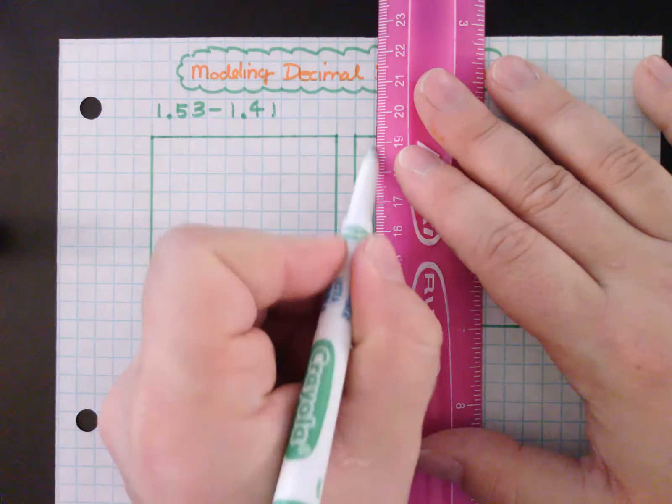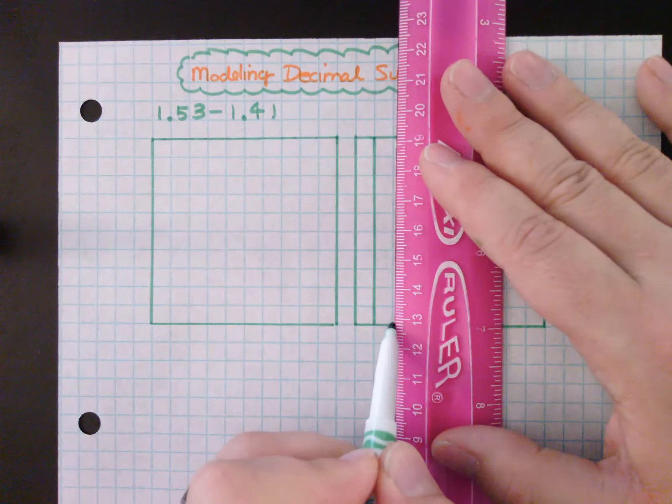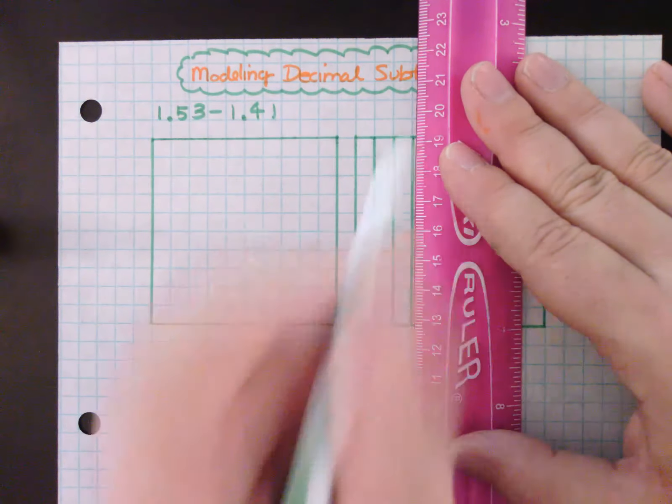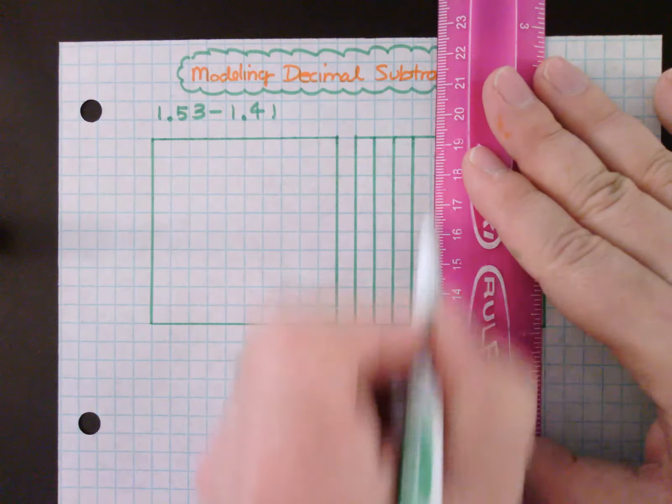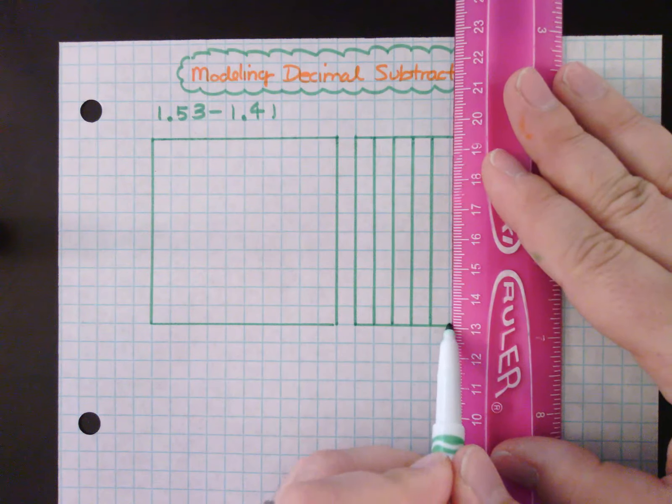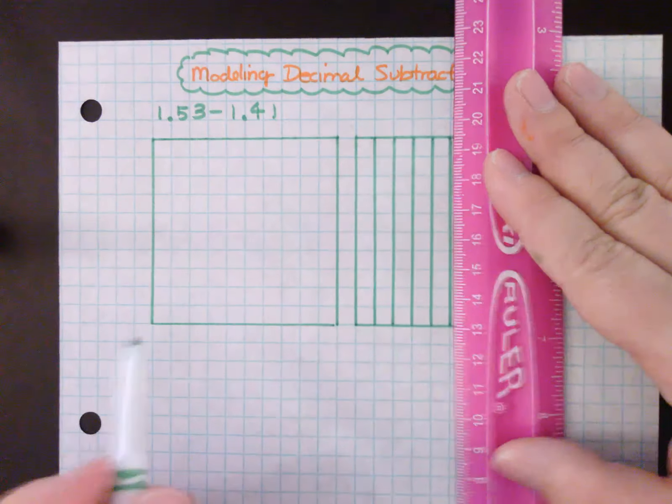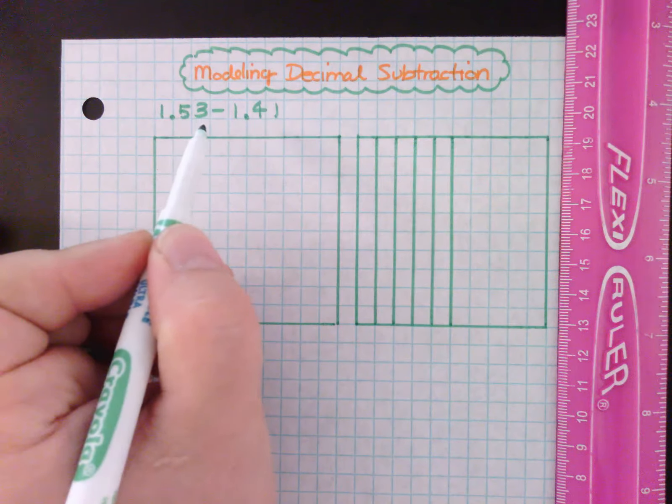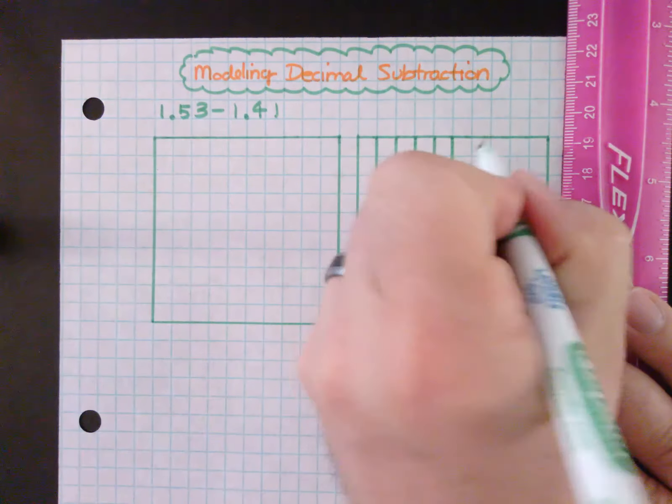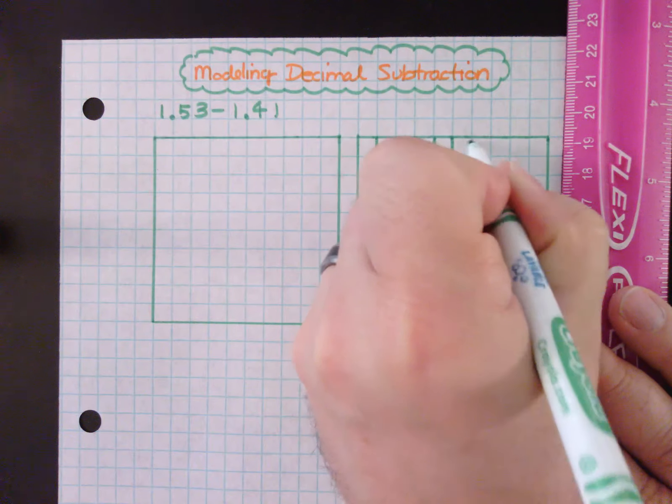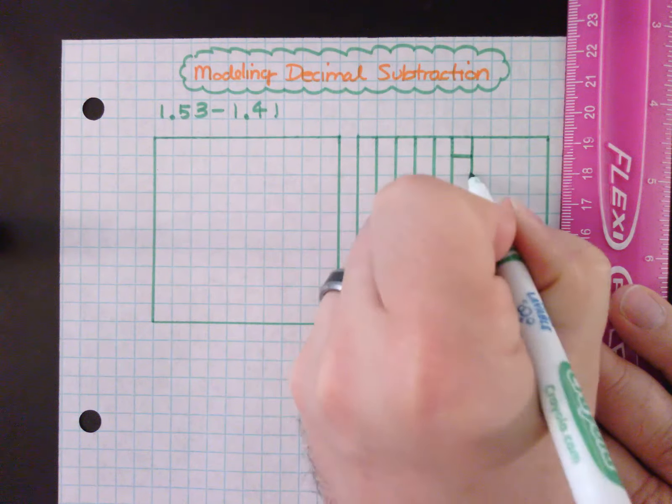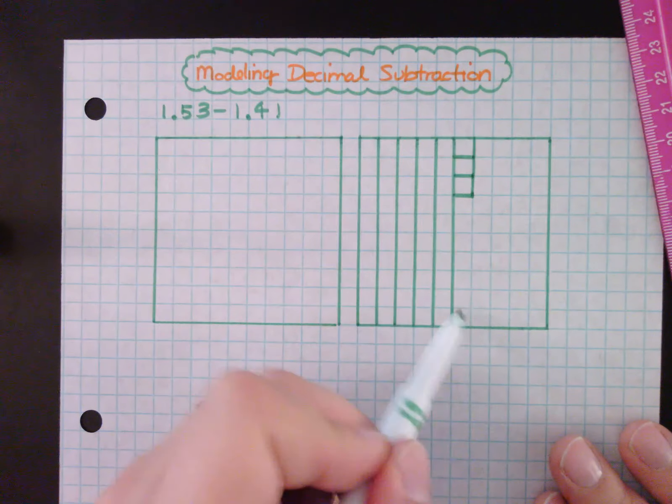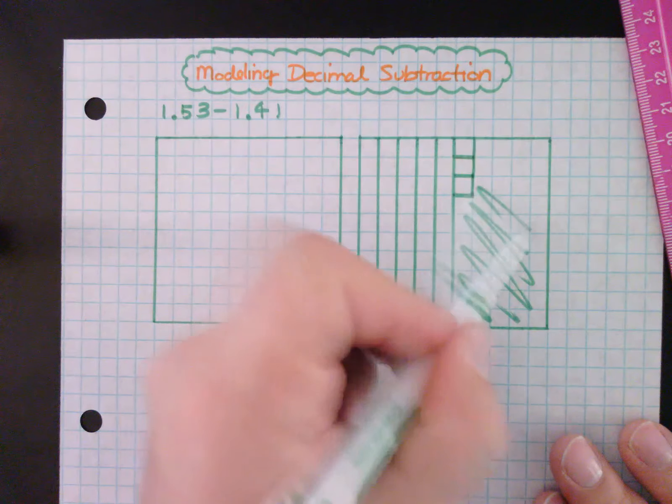There's one, two, three, four, and five. And then I have three one-hundredths. Three one-hundredths, so I'm going to draw three little boxes: one, two, three.